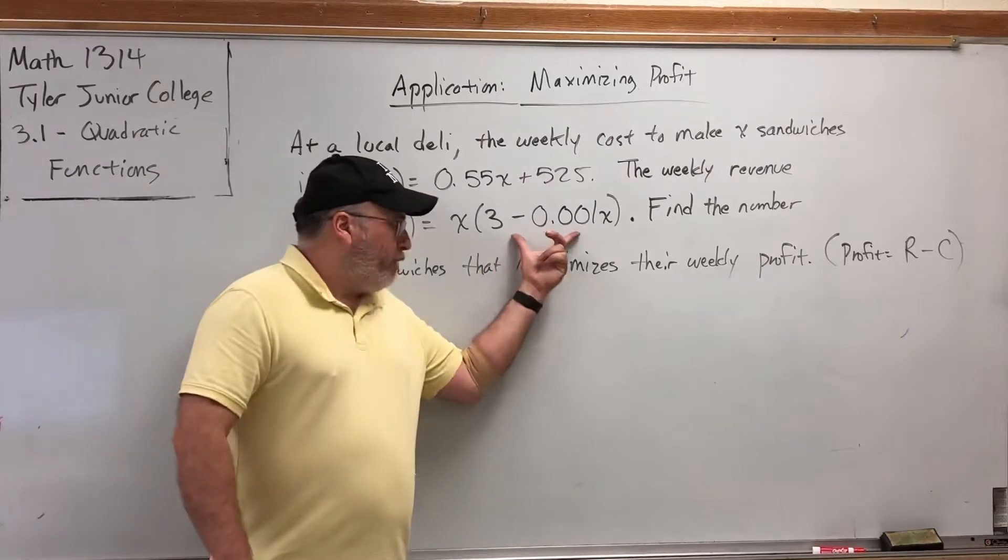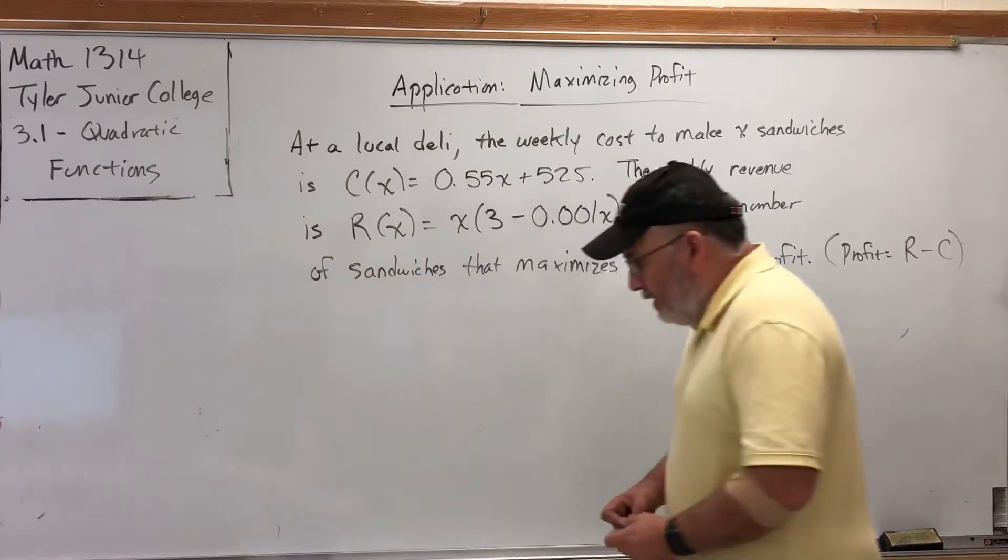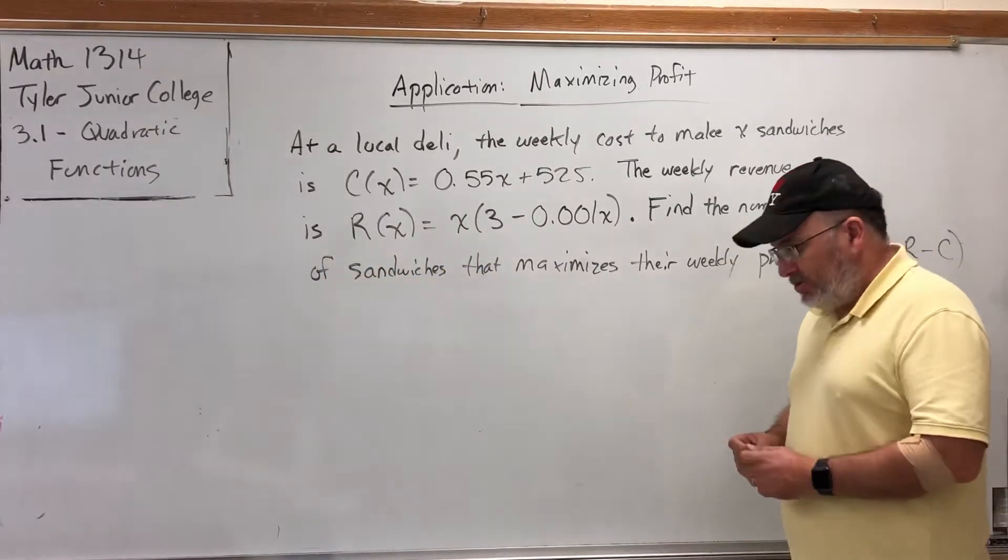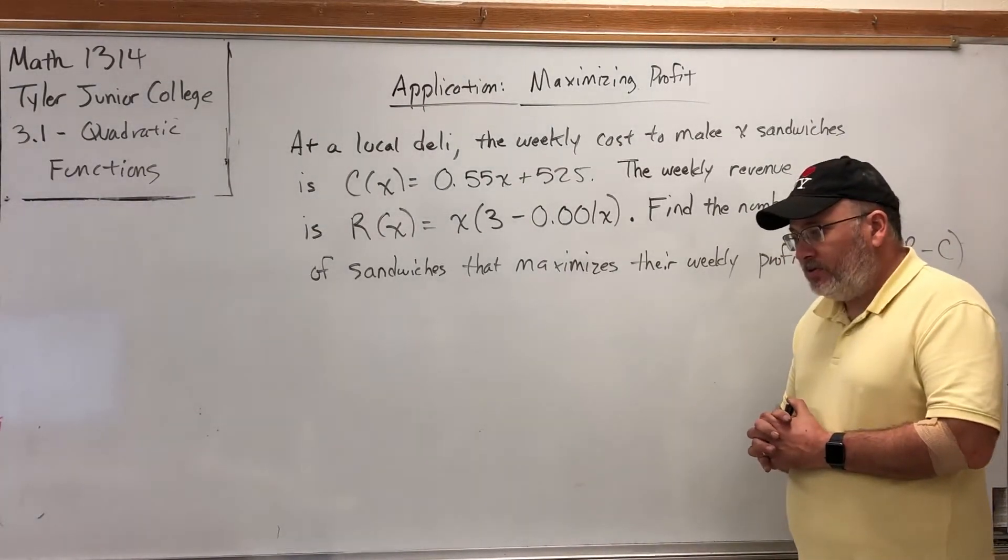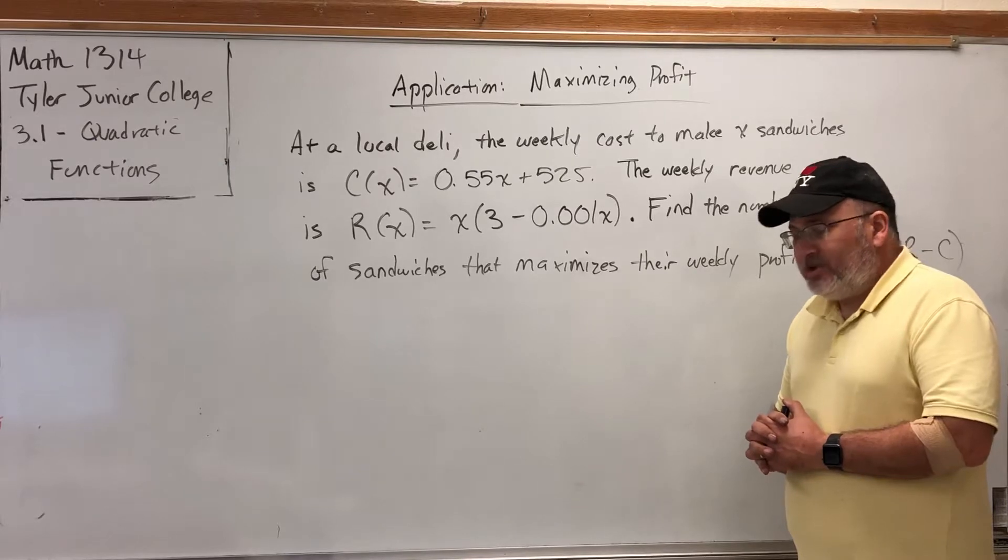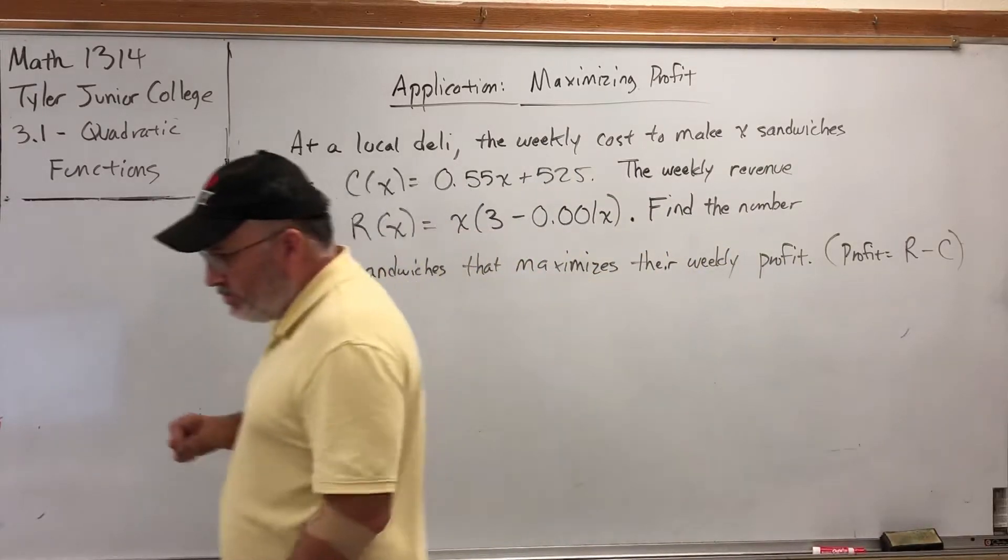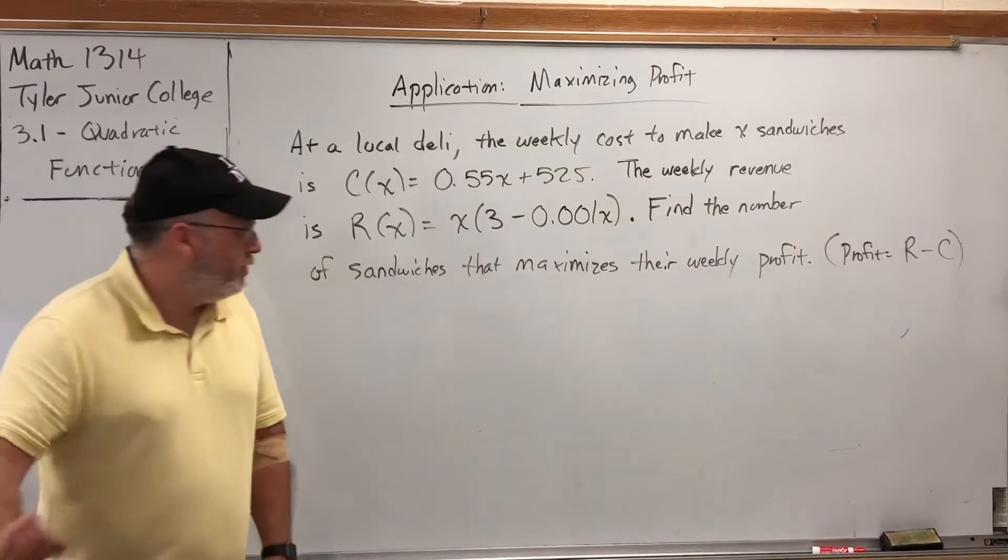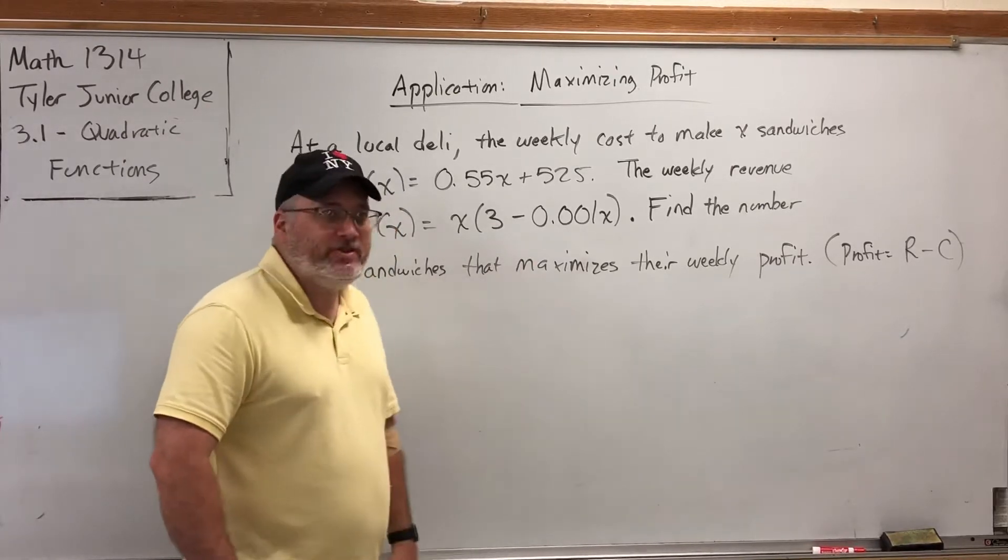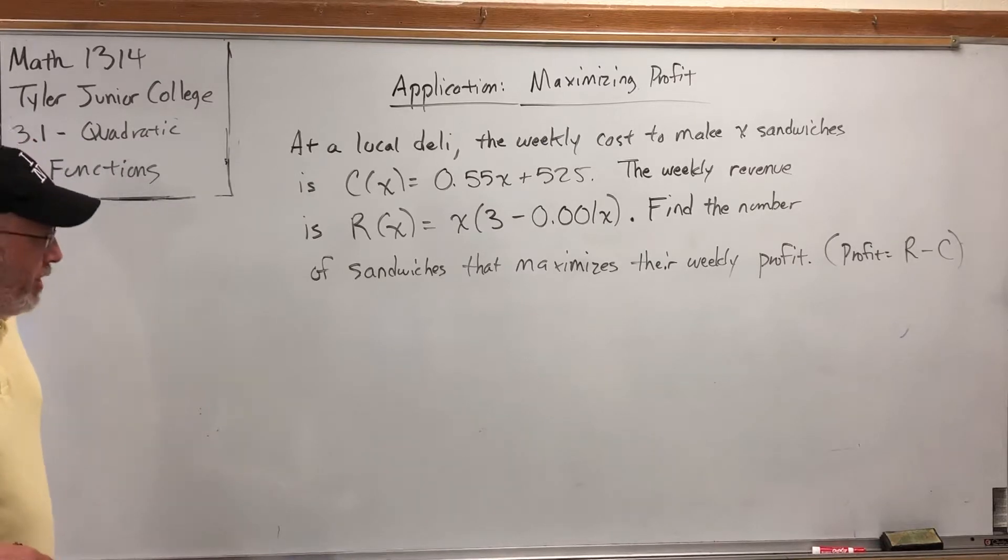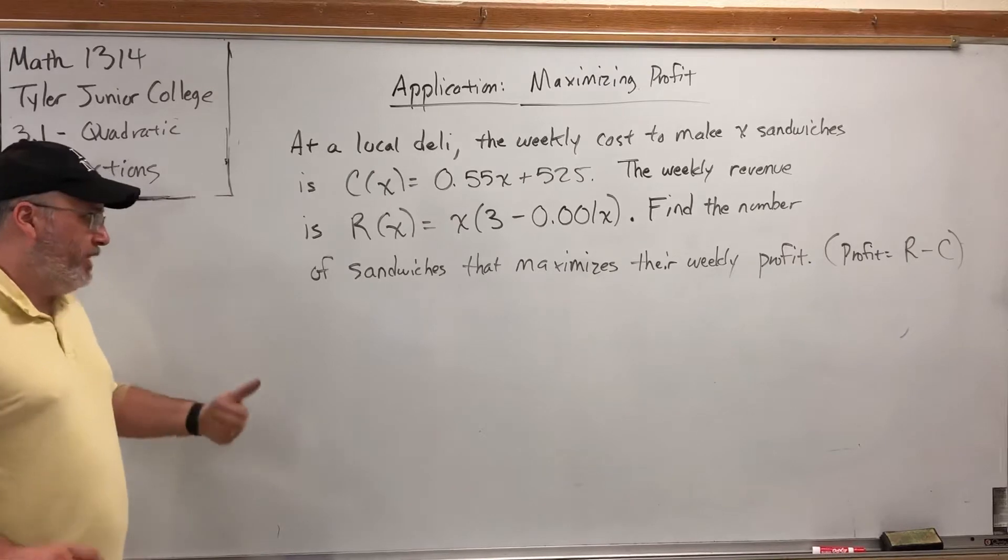But what the subtraction problem represents is the supply-demand issue. The more sandwiches you sell, the higher the demand... You know what? I'm just going to abandon this, not the problem but the explanation of this. It has to do with that the more sandwiches you sell, the cheaper you can sell them for. So for every time I sell, if the demand for a certain amount of sandwiches is high enough, I can lower the price. Which actually sounds backwards to me, but I'm not an economist. But regardless, this is the function for the revenue.